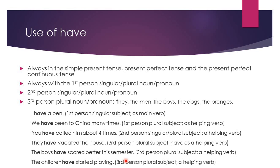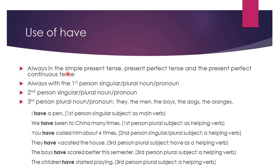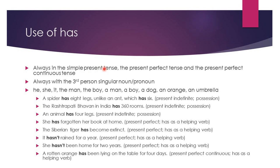Now let's take a look at how we can use 'has.' Just like 'have,' 'has' is also used in the simple present tense, the present perfect tense, and the present perfect continuous tense. Remember: 'has' is always used with the third person singular subject — he, she, it, the man, the boy, a dog, an orange — anything that is singular.